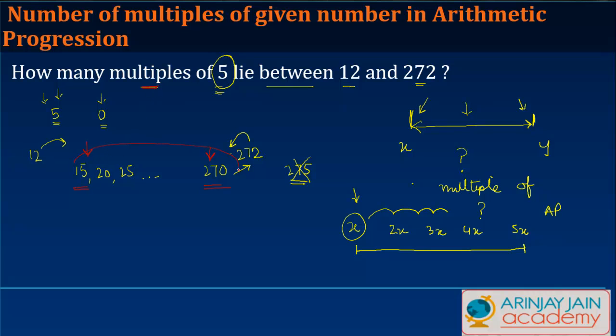How do you find out how many terms are there in an AP? By simply finding out which is the term, what is the number of this term 270. So the nth term of an AP is given by a + (n-1) × d.